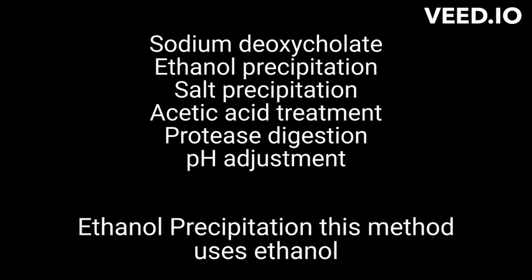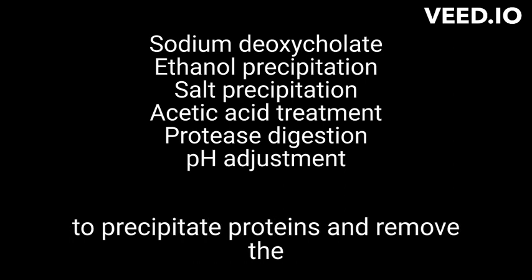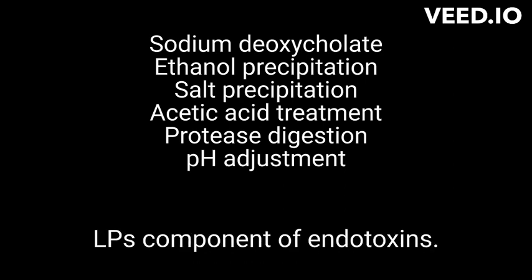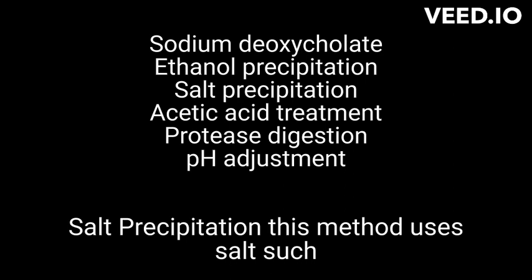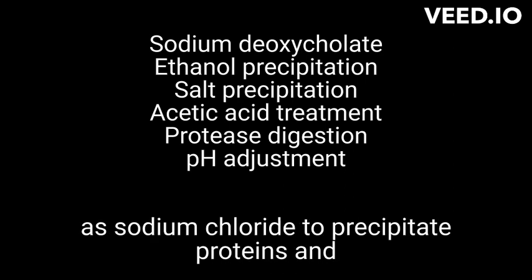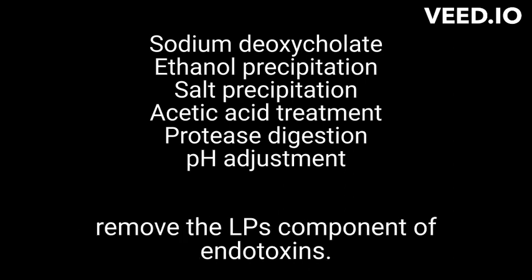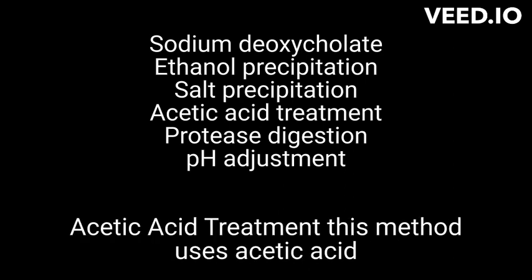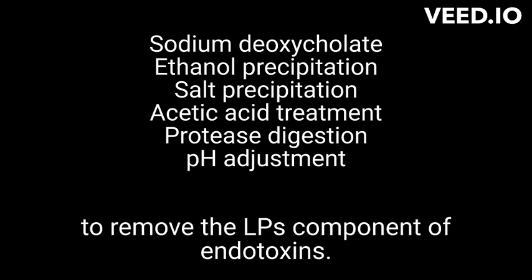Ethanol precipitation — this method uses ethanol to precipitate proteins and remove the LPS component of endotoxins. Salt precipitation — this method uses salt, such as sodium chloride, to precipitate proteins and remove the LPS component of endotoxins. Acetic acid treatment — this method uses acetic acid to remove the LPS component of endotoxins.